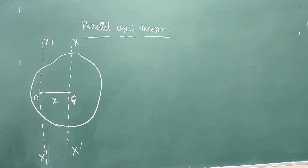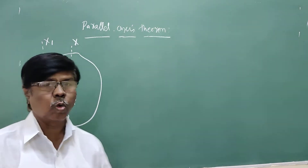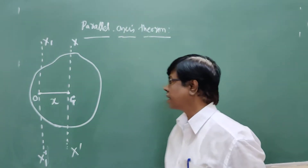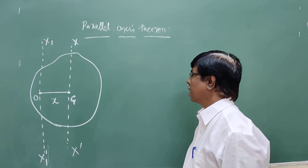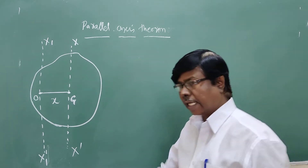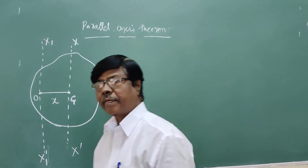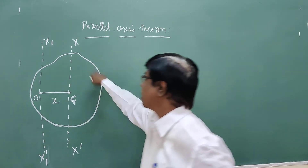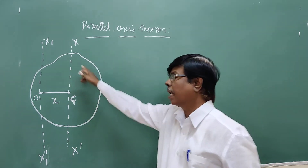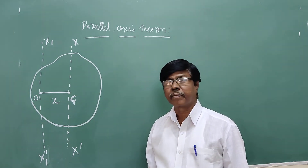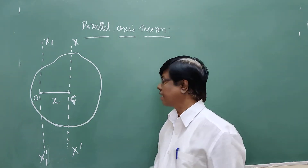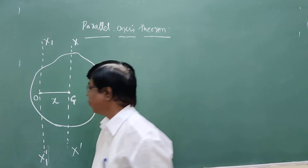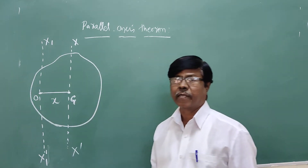X is the distance between the two parallel axes. We want to calculate the moment of inertia of the whole lamina or body about the axis of rotation O.